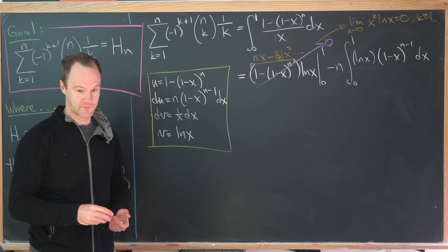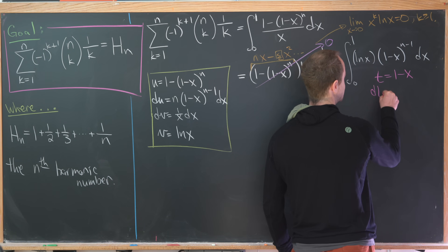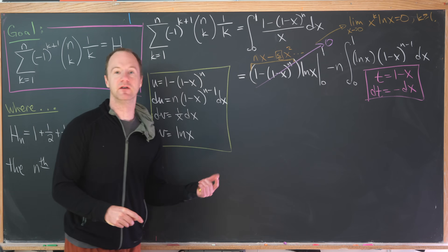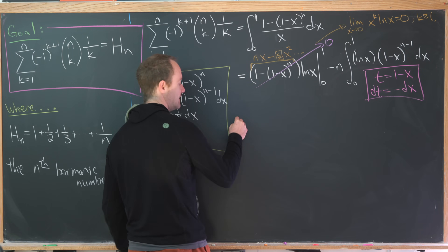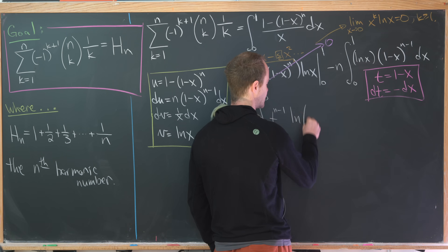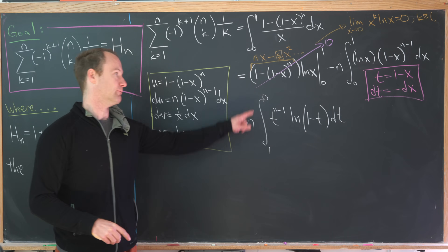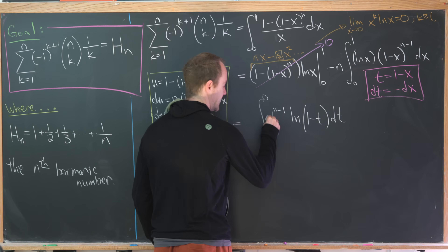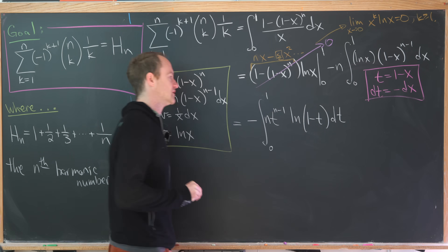We perform a change of variables t = 1-x, so dt = -dx. When x=0, t=1 and when x=1, t=0. This swaps the bounds of integration. After substitution and simplification — bringing n inside and swapping bounds back with a sign change — we get minus the integral from 0 to 1 of n t^(n-1) times ln(1-t) dt.